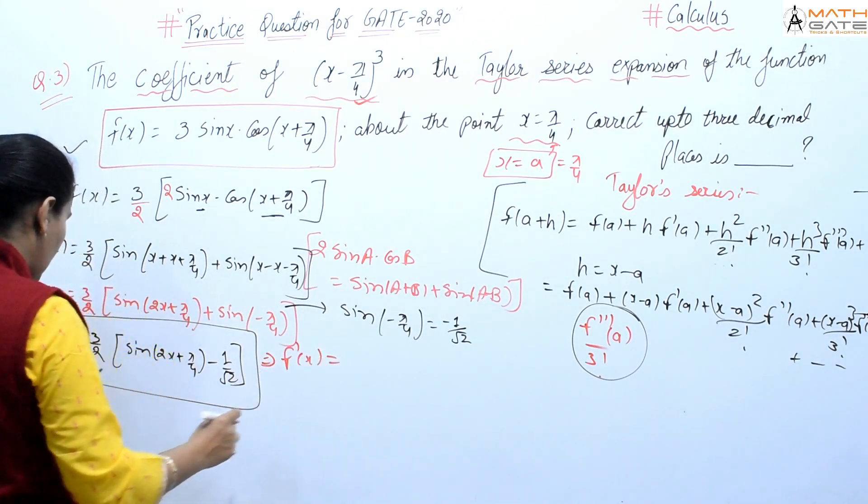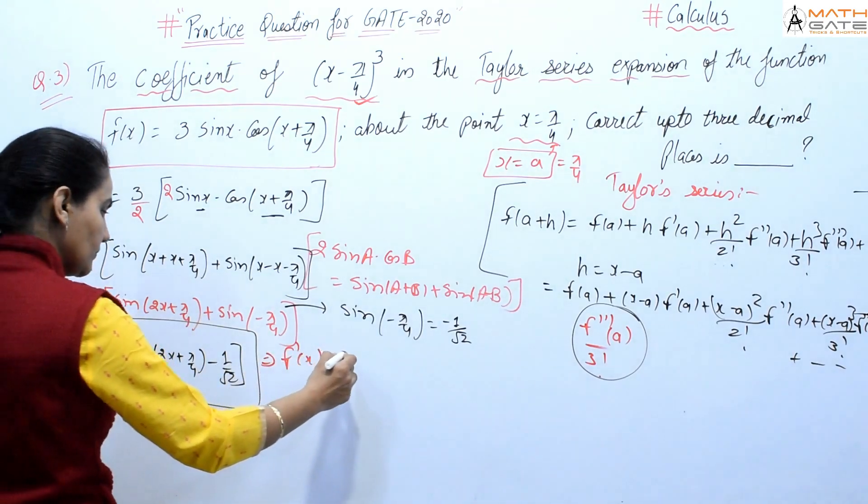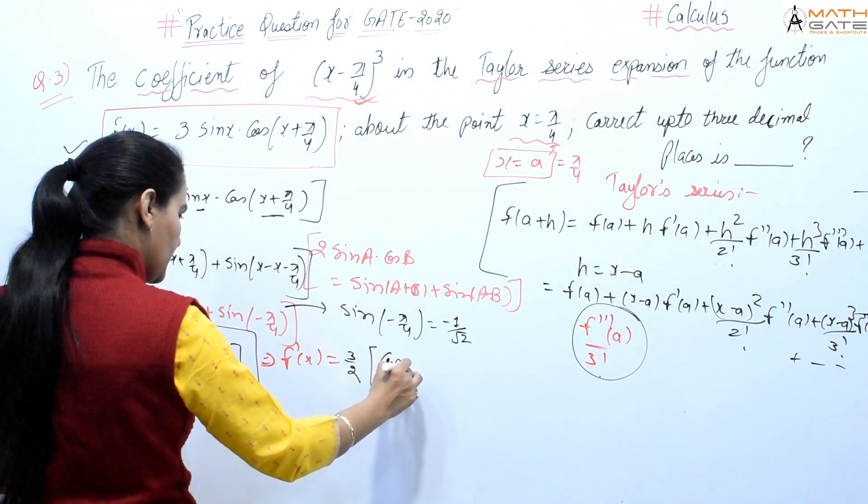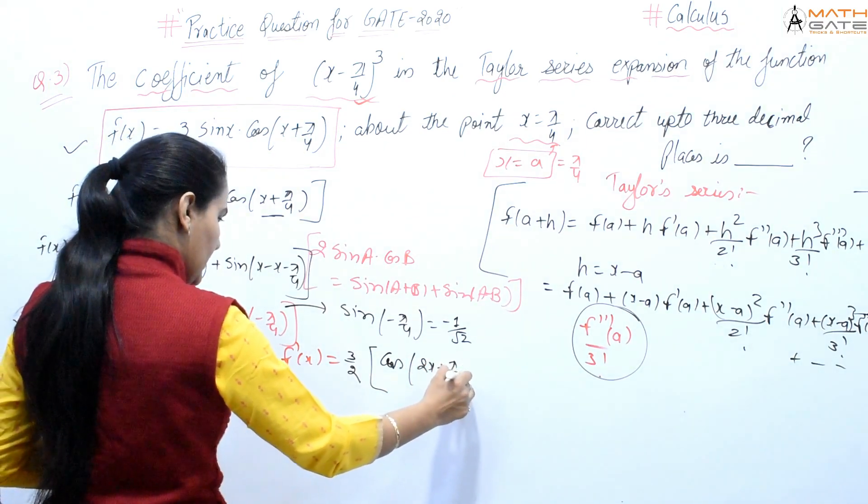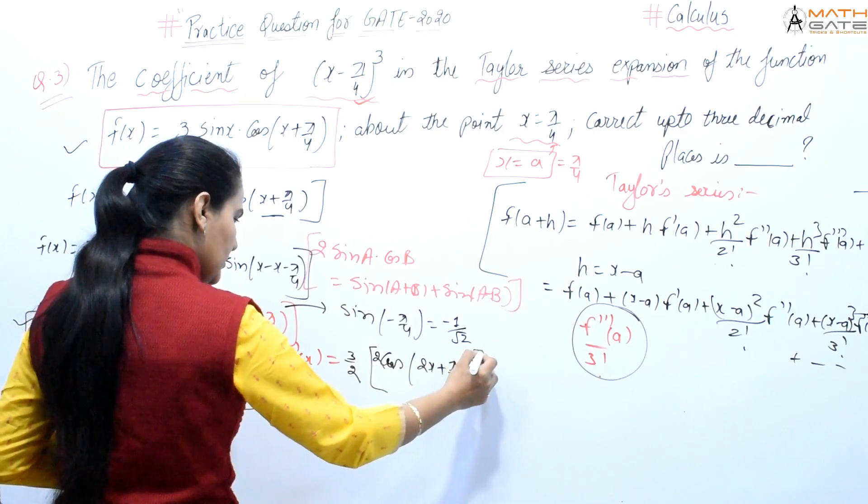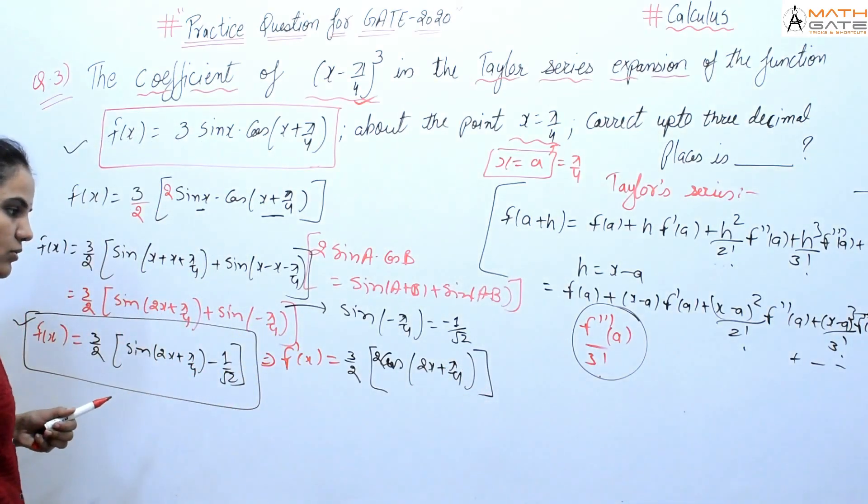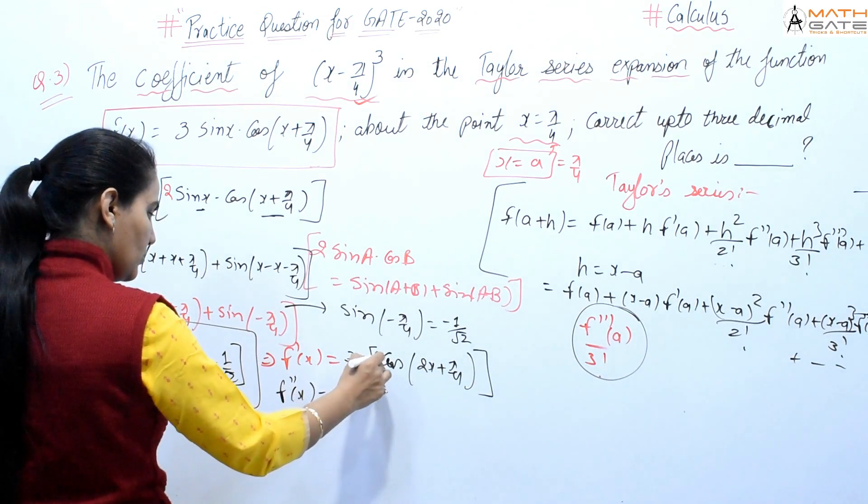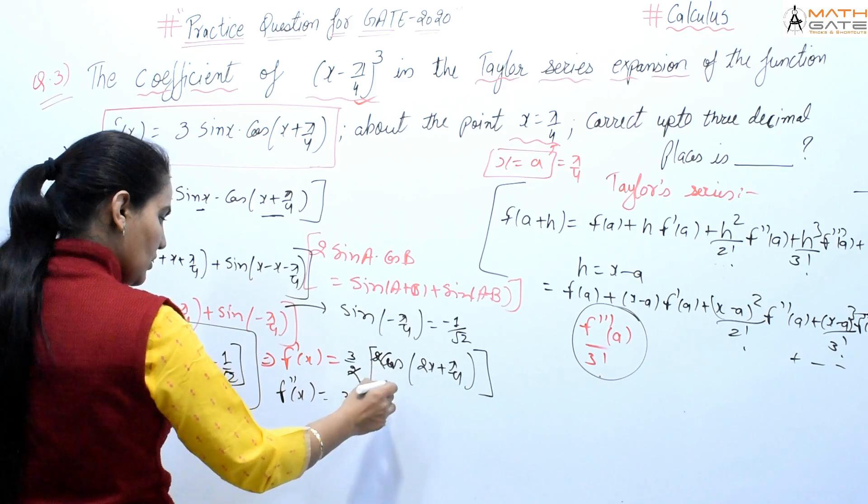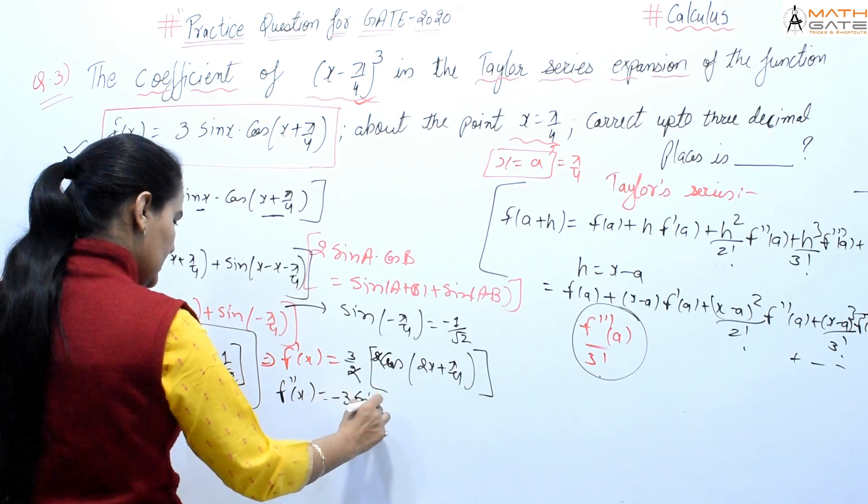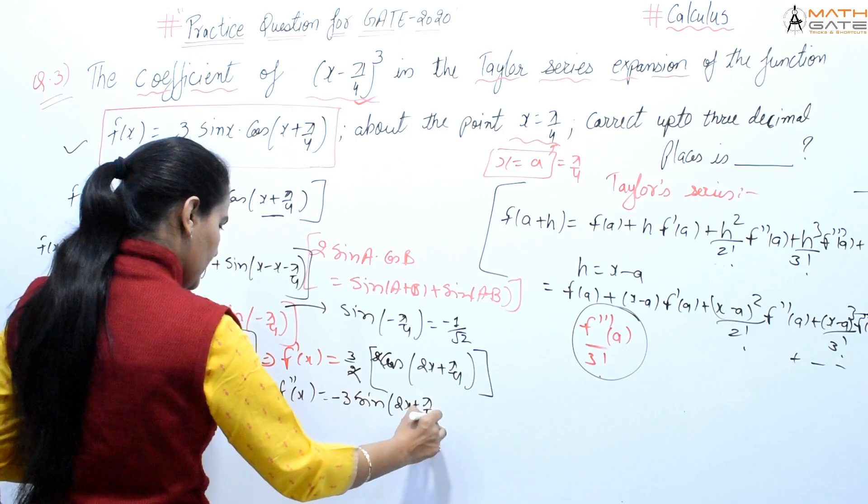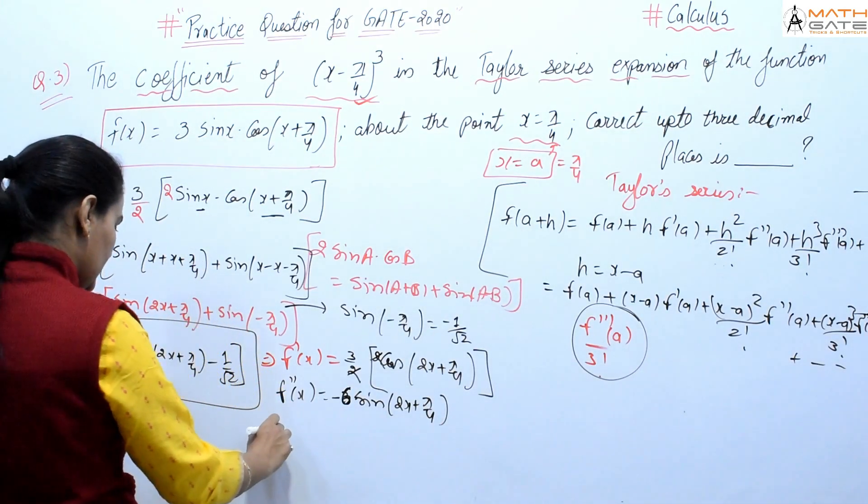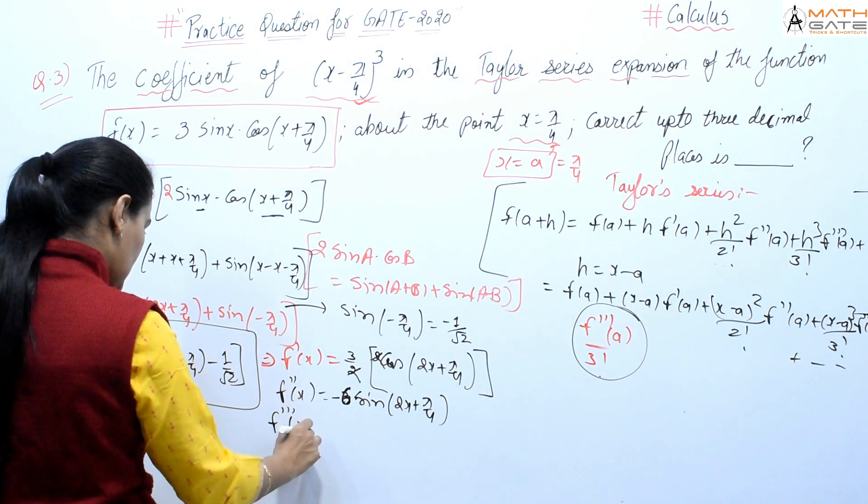f'(x) = (3/2)·2·cos(2x + π/4) = 3cos(2x + π/4). f''(x) = -3·2·sin(2x + π/4) = -6sin(2x + π/4). f'''(x) = -6·2·cos(2x + π/4) = -12cos(2x + π/4).